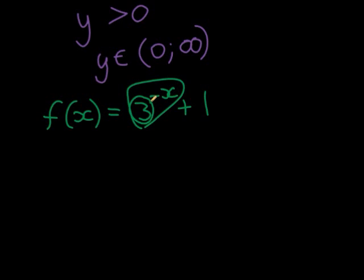So that power can never be zero. So 3 to the power of negative x. This negative doesn't change anything in terms of the range. This power can still not be zero or less than zero. So it will always be bigger than zero.